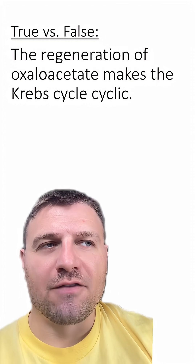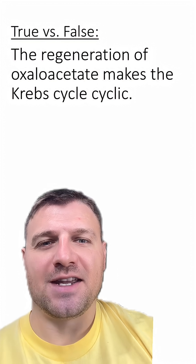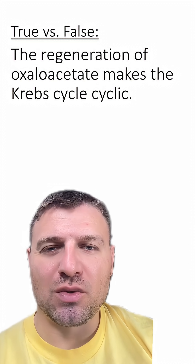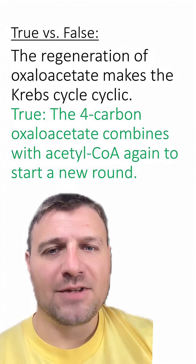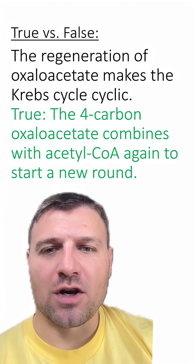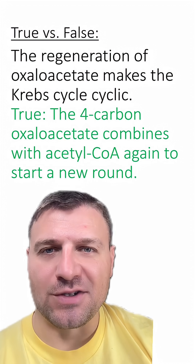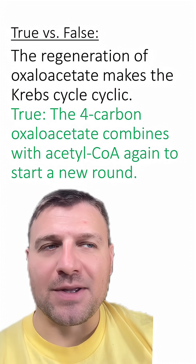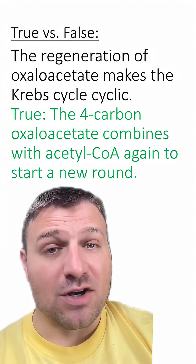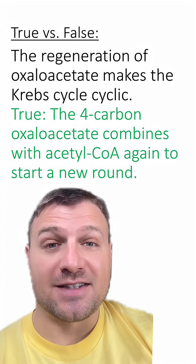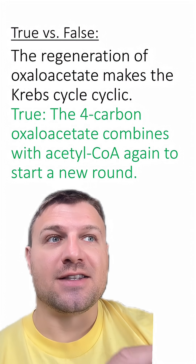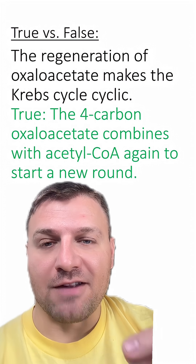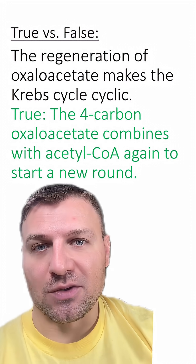The regeneration of oxaloacetate makes the Krebs cycle cyclic. Is this true or false? This is true. The four-carbon oxaloacetate is going to combine with acetyl-CoA, and it needs to be regenerated. So this process is a cycle since it goes around in a turn and basically regenerates that four-carbon molecule.